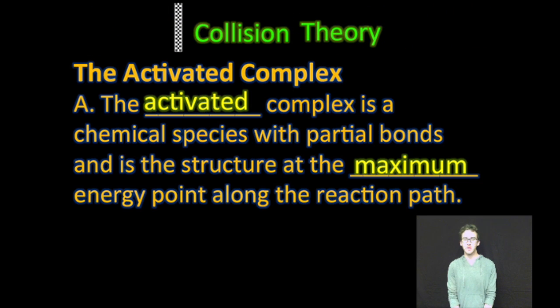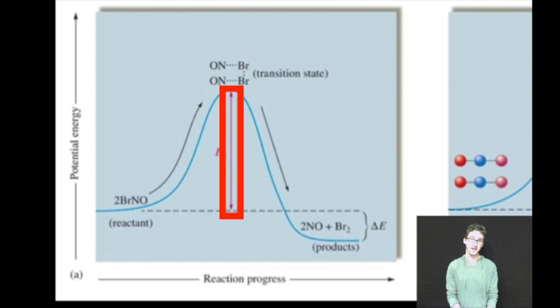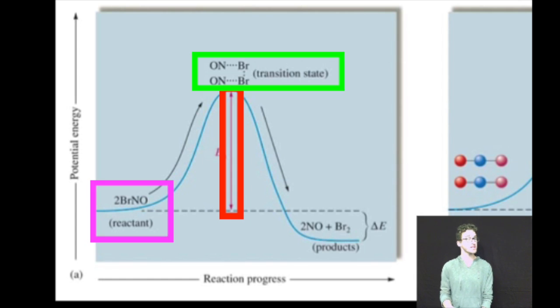Next let's talk about the activated complex. This is a chemical species with partial bonds and is the structure at the maximum energy point along the reaction path. And so we can define the activation energy also as the difference in energy between the reactants and that activated complex.